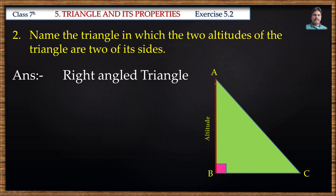The side AB is the altitude for this triangle. If we draw a perpendicular from vertex C to side AB, it coincides with side BC, so that is also an altitude for this triangle. If we draw a perpendicular from vertex B, it coincides with side AB. If we draw a perpendicular from vertex B, it coincides with side BC. Therefore, the two sides AB and BC are the two altitudes of the right-angle triangle.